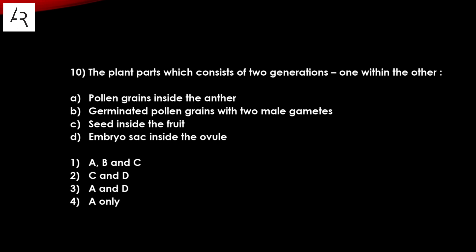The plant part which consists of two generations, one within the other, is the pollen grain inside the anther. Two generations — one within the other — option A is right.